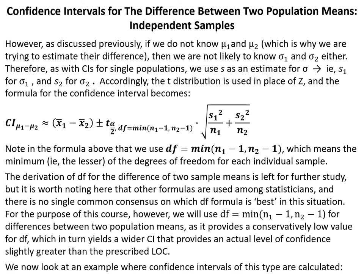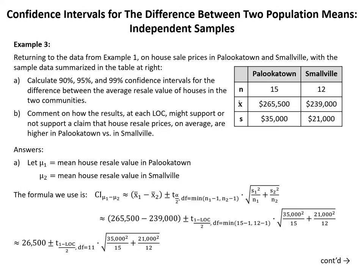We now look at example 3, where we return to the data from example 1 on house sale prices in Palookatown and Smallville, with the sample data summarized in a table showing the sample size, X bar, and S for each town. We are asked to calculate 90%, 95%, and 99% confidence intervals for the difference between the average resale value of houses in the two communities, and to comment on how the results at each level of confidence might support or not support a claim that house resale prices on average are higher in Palookatown versus Smallville.